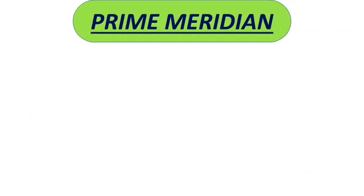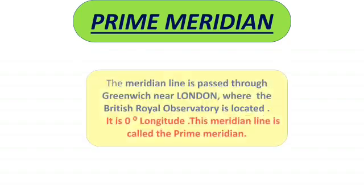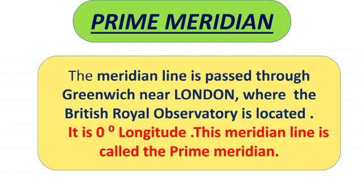Next is the prime meridian. Unlike parallels of latitude, all meridians are equal in length. Because of this, it was difficult to number the meridians. So all countries decided that the count should begin from the meridian which passes through Greenwich, near London, where the British Royal Observatory is located.